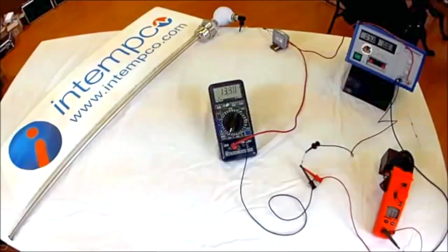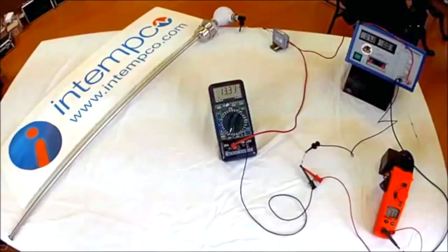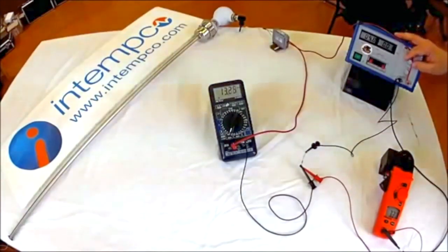For our transmitters, the maximum loop resistance can be calculated with the equation: voltage supply minus 9 volts all divided by 20 milliamps. At our current supply voltage of 15 volts, that gives us a maximum resistance of 300 ohms. Since we are using a 250 ohm resistor, that is within spec at this point.